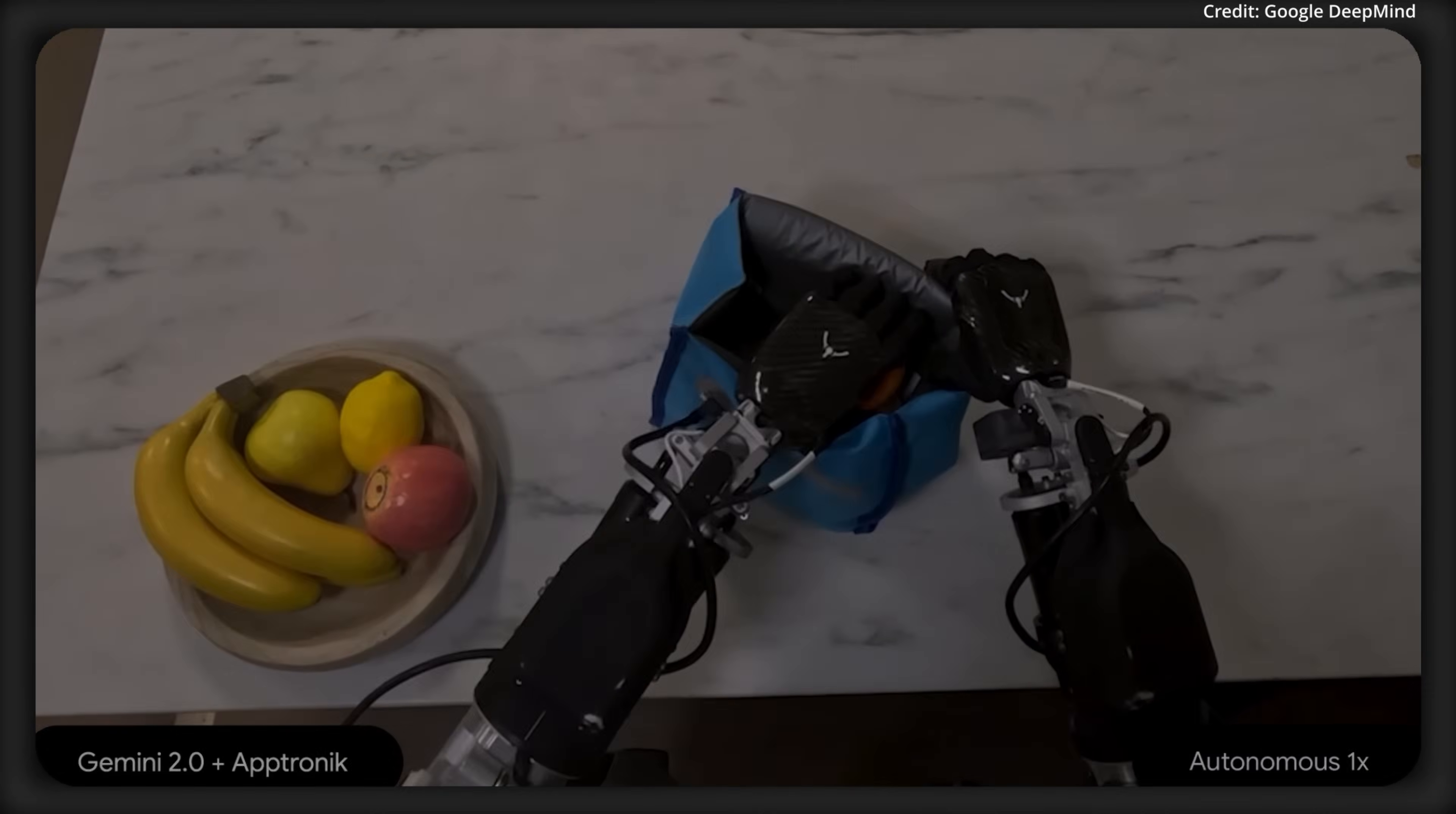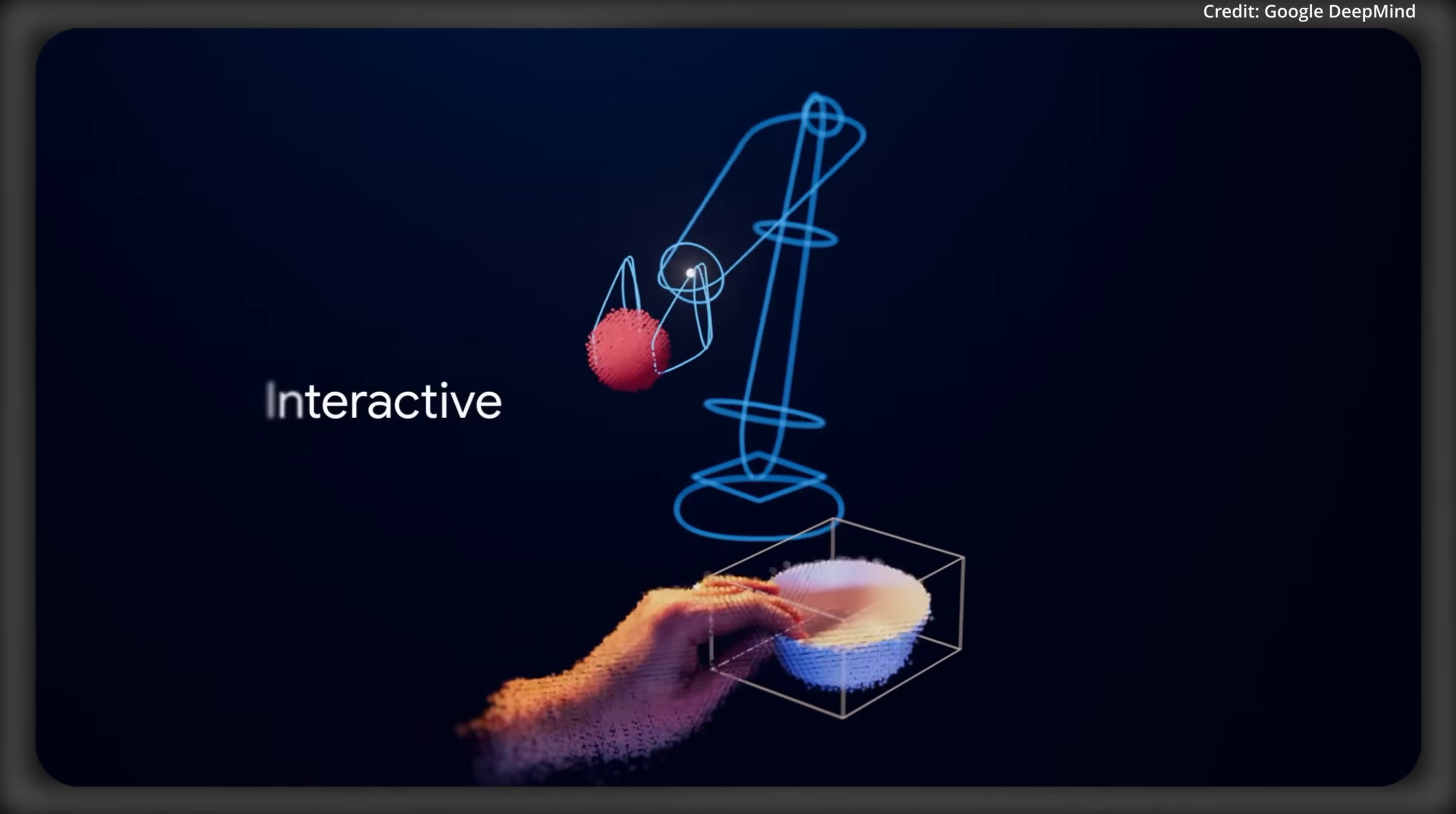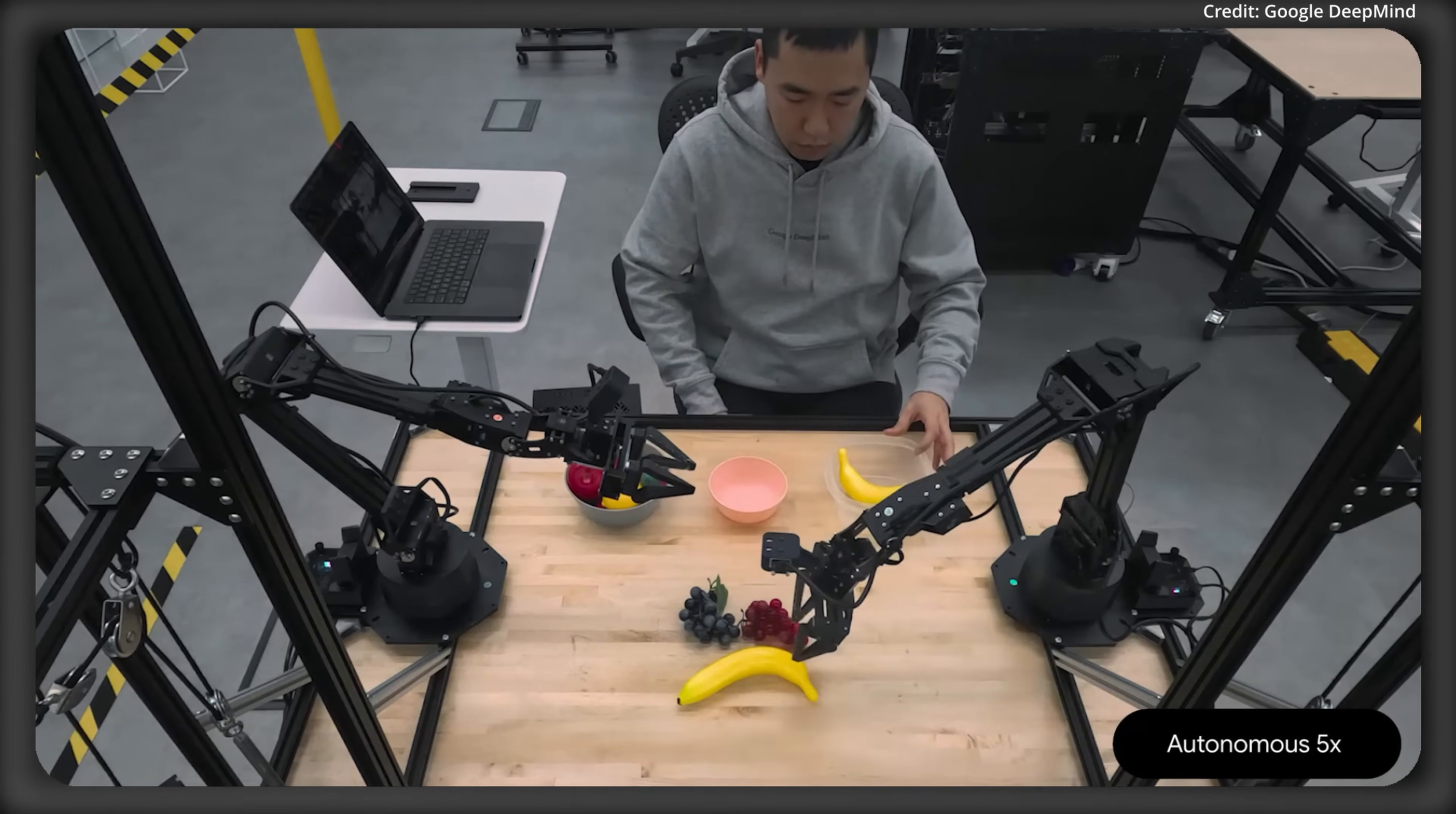But this brings us into the second point, which is interactivity. Basically, in order to operate in the real world, robots have to be able to look at their surroundings and figure out on the fly exactly what to do. And because Gemini Robotics is built on Gemini 2.0, it's able to figure all this out quite intuitively.